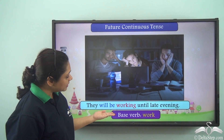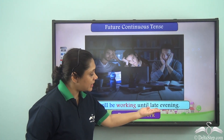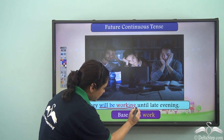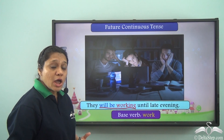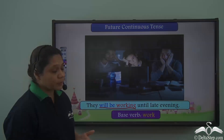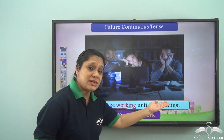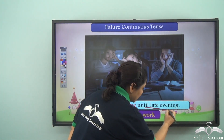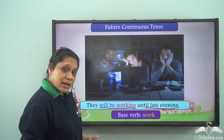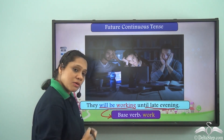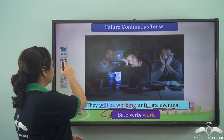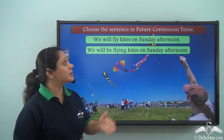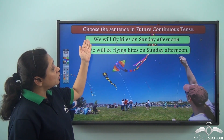'They will be working until late evening.' In this sentence, the verb form 'will be working' is showing us that an action will be in progress in the future — they will keep on working till it is late evening. 'Working' is formed from the base verb work. Now that you have learnt how and when to use the future continuous tense, can you choose the correct sentence?